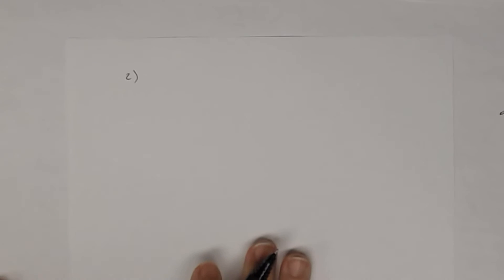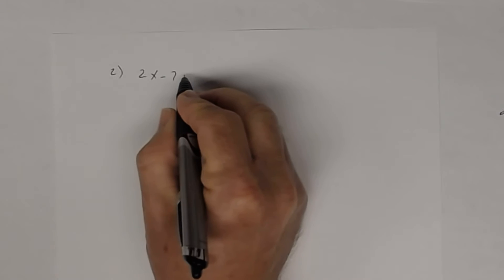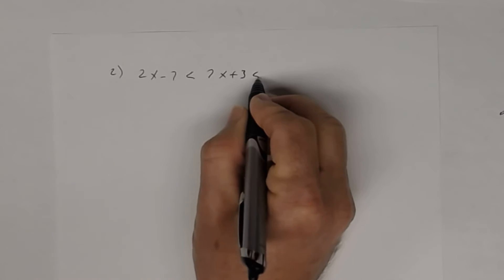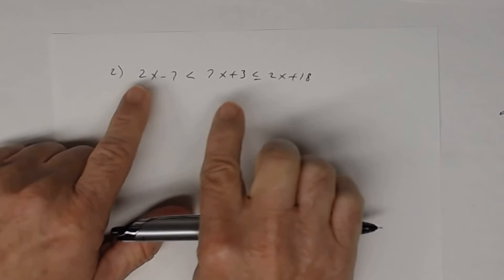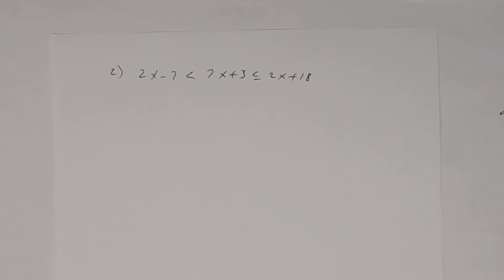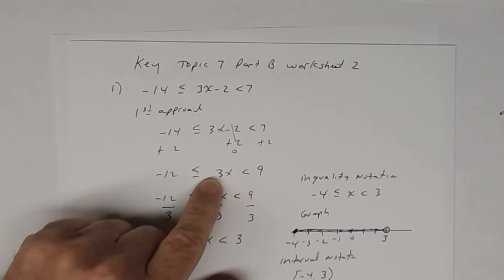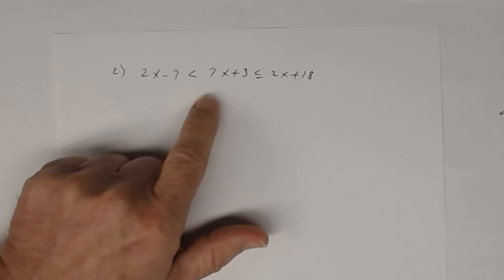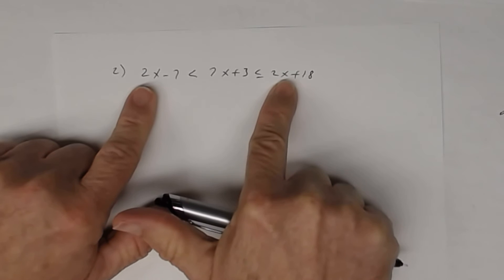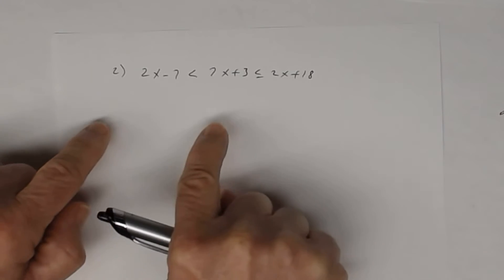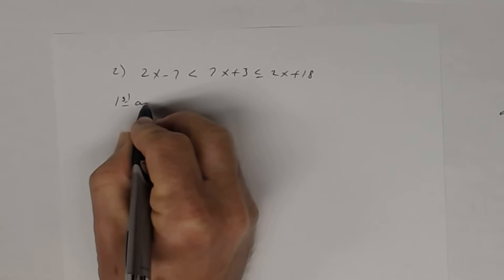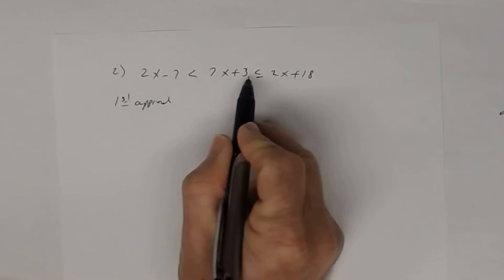Now let's look at number two. Number two was: 2x − 7 < 7x + 3 ≤ 2x + 18. In this case you have variables in all parts. You can use the first approach here only because the variable terms on the outsides are identical — both are 2x.